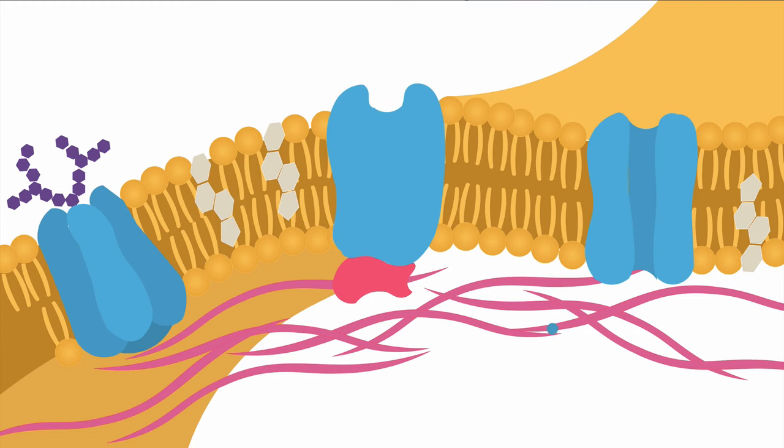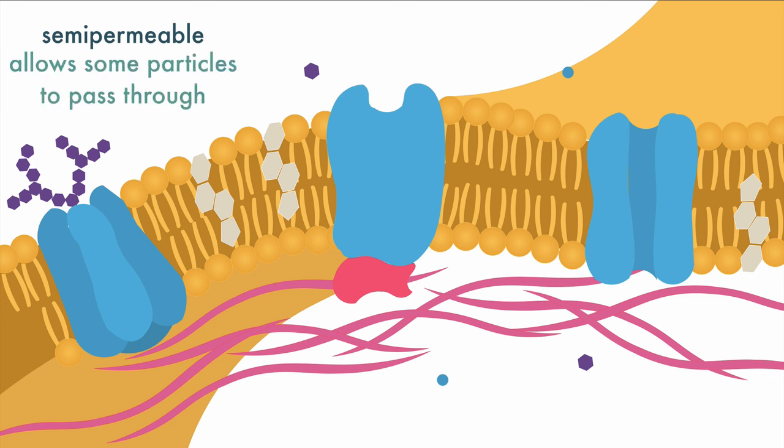All cells need a way to get materials in and out. The barrier that controls the passage of materials is the cell membrane. Some materials can pass through the cell membrane on their own, but others cannot. To describe this, scientists say the membrane is semi-permeable, which means that only some particles can pass through.